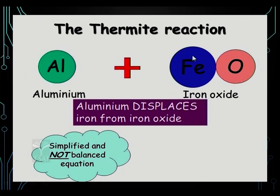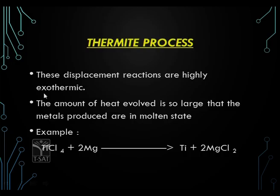This reaction is only to show that aluminium displaces iron from iron oxide; this type of reaction is called a displacement reaction. In the thermite process, displacement reactions are highly exothermic. The amount of heat evolved is so large that the metals which are extracted get converted to liquid state — they come out in molten form.